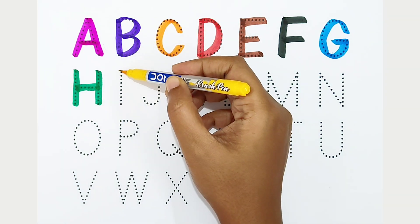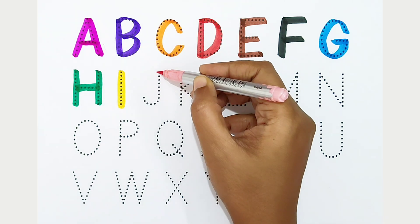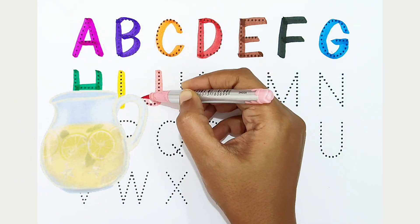I - yellow color. I is for ice. J - light pink color. J is for jug.